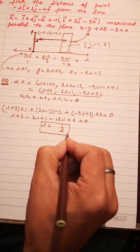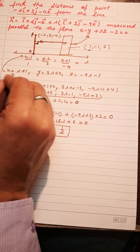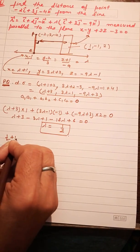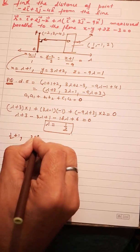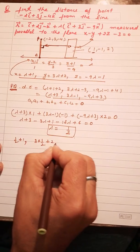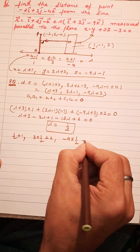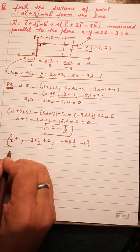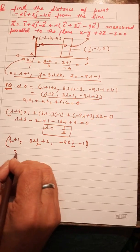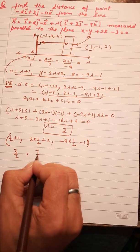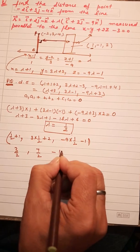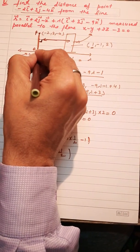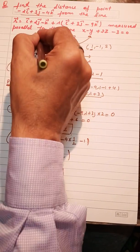Substituting λ = 1/2 into the coordinates of Q: x = 1/2+1 = 3/2, y = 3×(1/2)+2 = 7/2, and z = -9×(1/2)-1 = -11/2. So the coordinates of Q are (3/2, 7/2, -11/2).